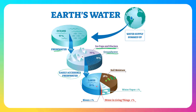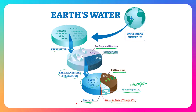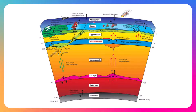Of that accessible 1%, roughly 52% would be lakes, 38% would be soil moisture — the water contained within the soil — 1% would be water vapor in the atmosphere like humidity, 1% is water in living things such as living organisms like us, and then 1% would be rivers, which flow from higher to lower elevation and typically drain into oceans.